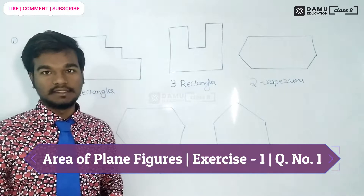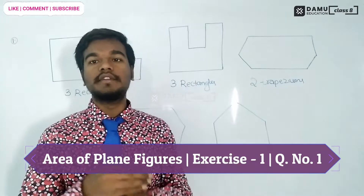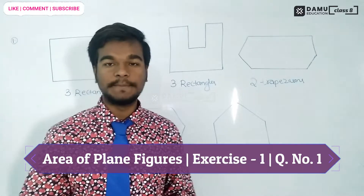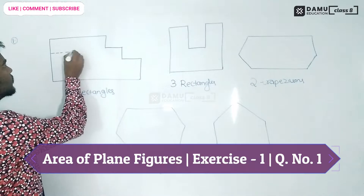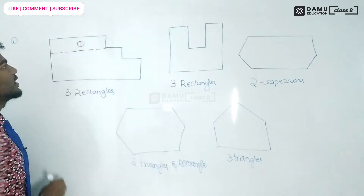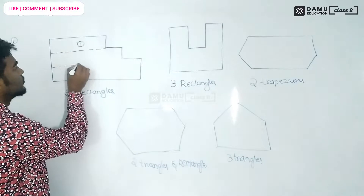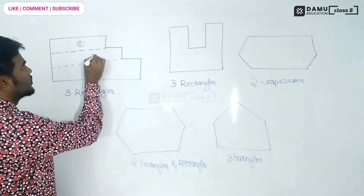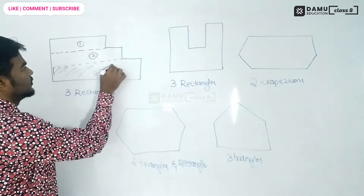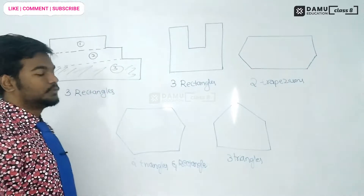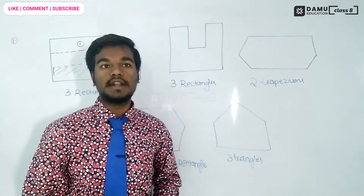For the first shape, they ask us to divide the given shape into three rectangles. We need to add some more lines in order to divide it. You can make it like this — this one becomes one rectangle, next one becomes second rectangle, and this one will be the third rectangle.